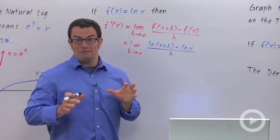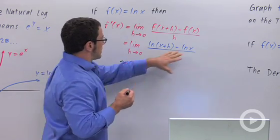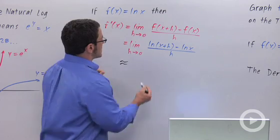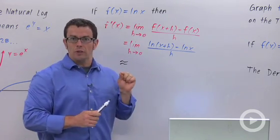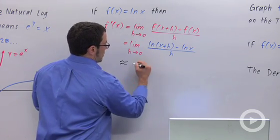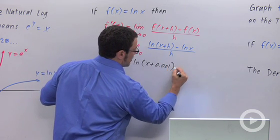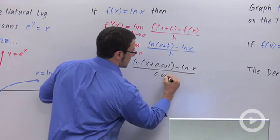So instead, what I'm going to do is play a little game of guess the function. The way I'm going to do that is, I need to get this in a form that I can actually graph on my calculator. And so what I'm going to do is approximate this limit by taking an h value that's really, really small, like 0.001. And so I'm going to approximate this limit with natural log of x plus 0.001 minus ln x all over 0.001.